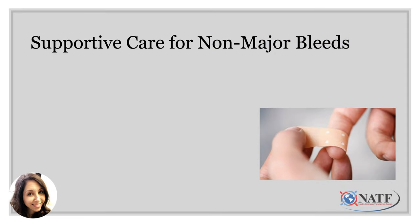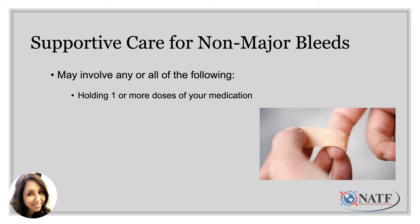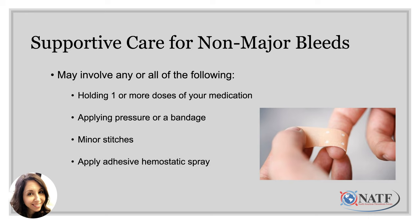With a major bleed, you may start to feel lightheaded or dizzy due to loss of blood, and you should seek help immediately, as this type of bleeding is likely to affect the proper functioning of your major organs and can even be life-threatening. When we talk about supportive care for non-major bleeds, measures include holding one or more doses of your medication to let the anticoagulant effect wear off, applying a bandage or pressure to the spot of bleeding, minor stitches to close the wound, or applying a topical adhesive hemostatic spray that you can get over the counter to help the body start to form a clot and stop the bleed.